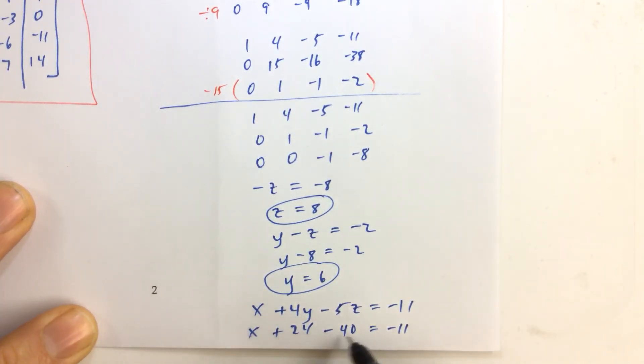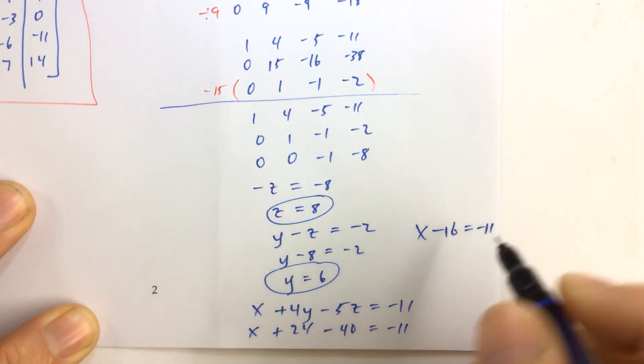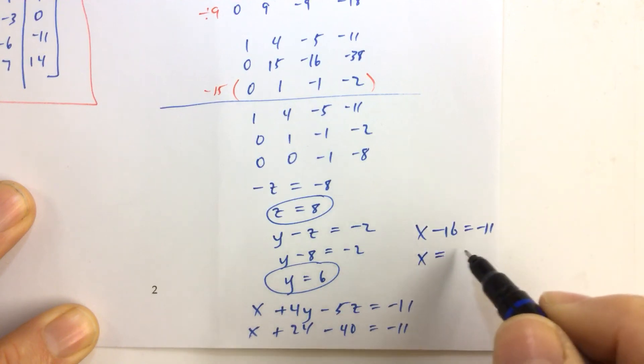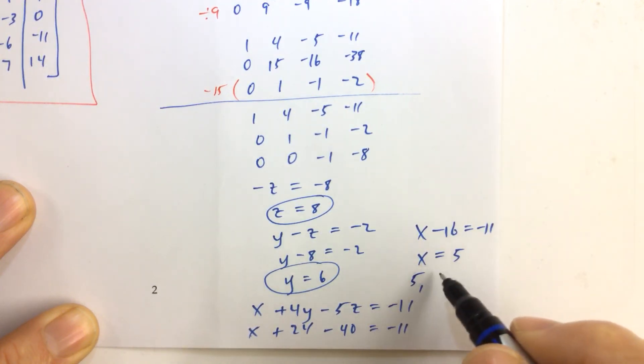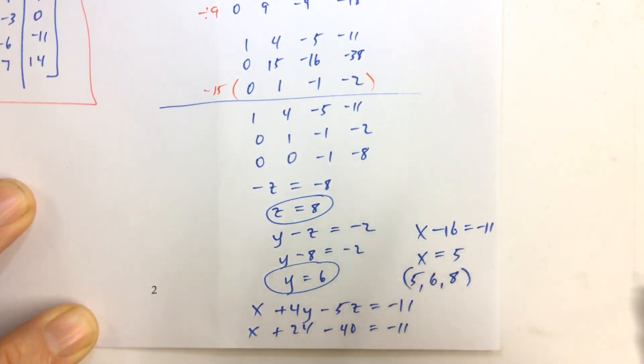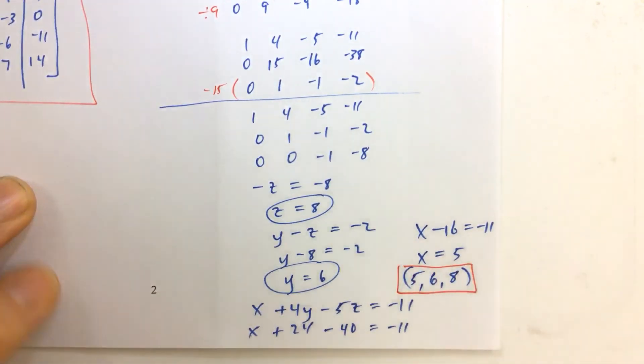X minus sixteen equals negative eleven. So we have x minus sixteen equals negative eleven. And if we add sixteen to both sides, we get x equals five. And so, we get the solution to our system of linear equations solved by using matrices as five, six, and eight. That's good. So let's go. Here we go.